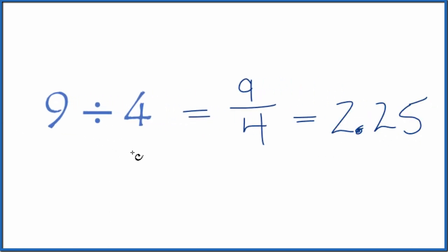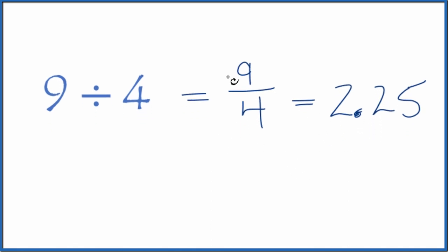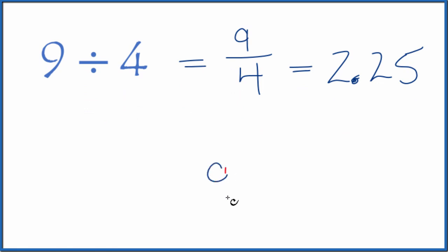So 9 divided by 4 equals the fraction 9 fourths or the decimal 2.25. You could also divide 9 by 4 longhand to see what we get as our answer.